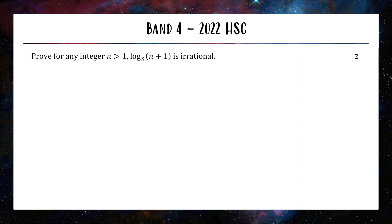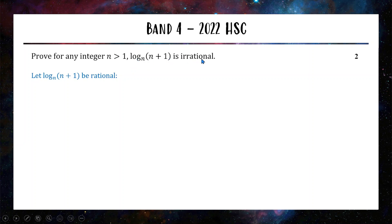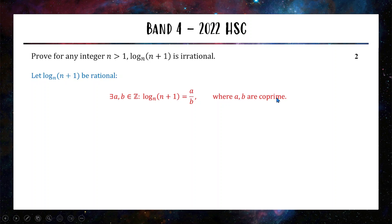Another band 4 question — band 4 and 3 is where we should be able to pick up good marks if we know our stuff. This is an irrationality proof from 2022: given n greater than 1, show that log base n of (n+1) is irrational. Whenever I see an irrationality proof, my brain goes straight to proof by contradiction, because that's what you should have been taught in class. We assume the opposite — assume log base n of (n+1) is rational — and write it as a fraction a/b where a and b are integers and also co-prime, meaning a/b is already simplified with no common factors. Our goal is to show that this statement doesn't make sense, and then by contradiction the original must be true.